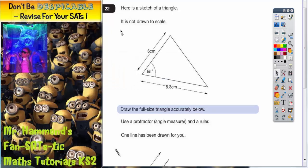Question 22 is all about using an angle measure and a ruler to construct a shape according to given measurements. We've got a sketch of a triangle, it is not drawn to scale.